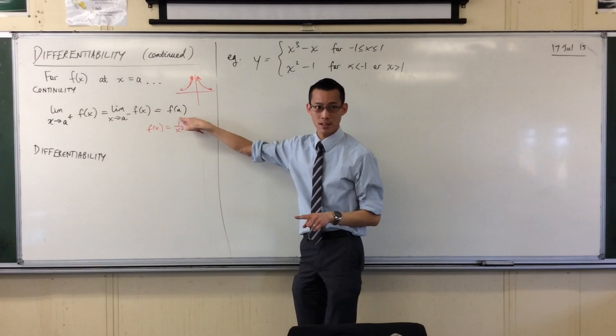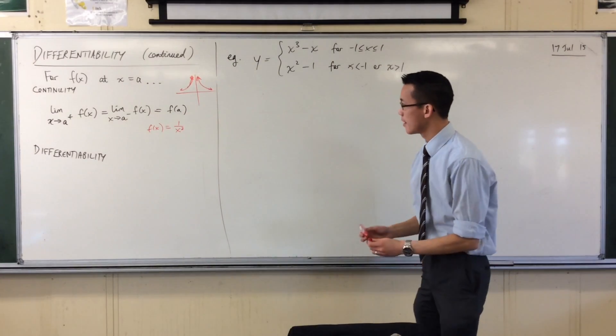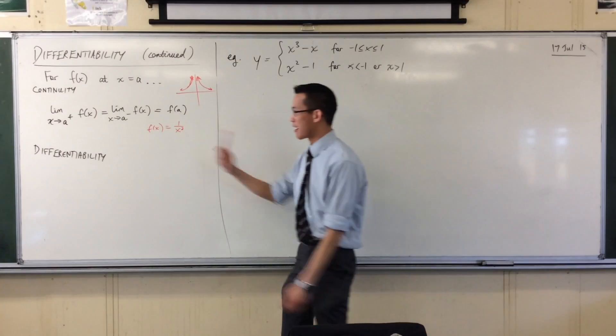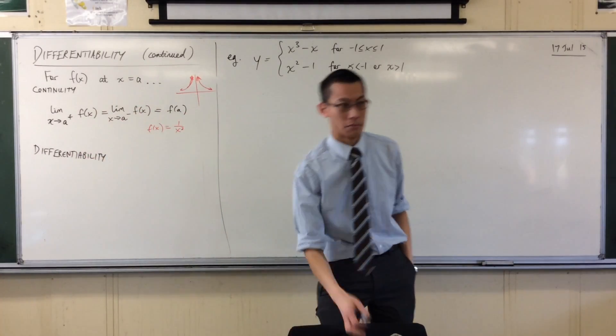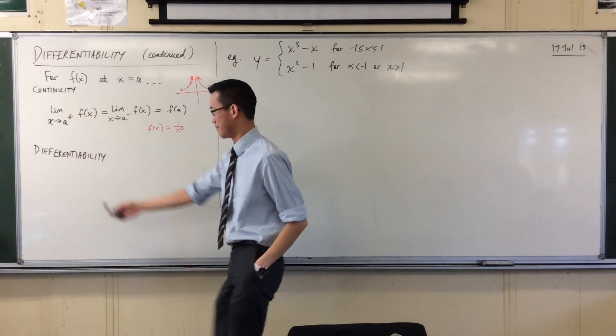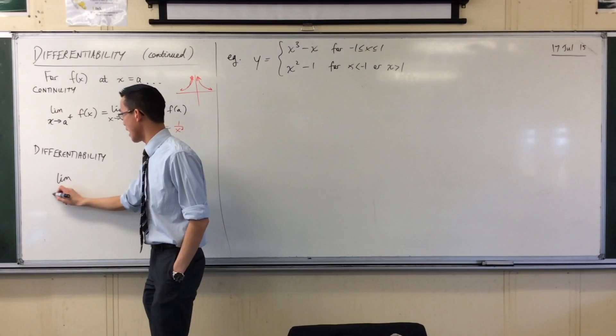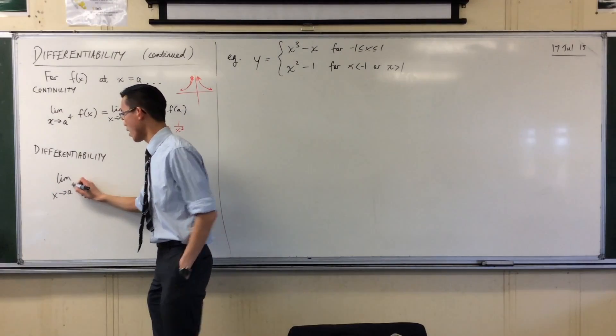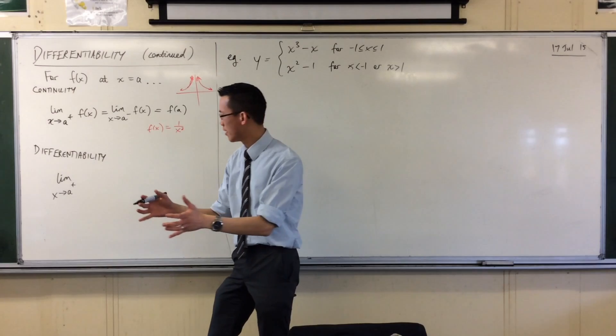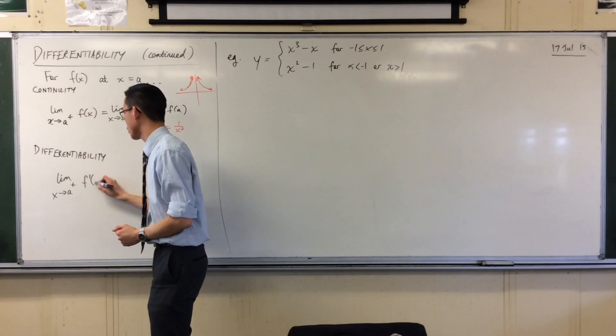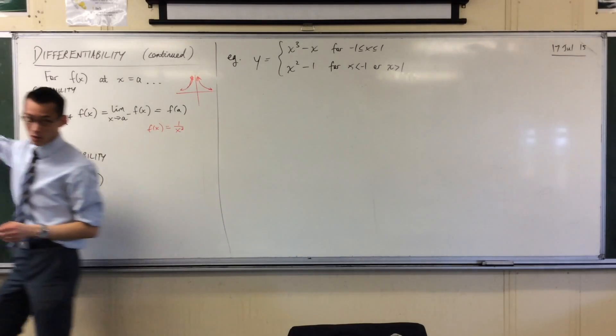Now the great thing about having this formal definition here is because the definition for differentiability is almost identical, but it's about the derivative, right? So instead of this limit, it's going to be the limit as x approaches a from above, not of f the function itself, but I'm interested in the derivative f dash. And what I want that to be equal to is what's happening to the derivative if I'm approaching from the other direction.